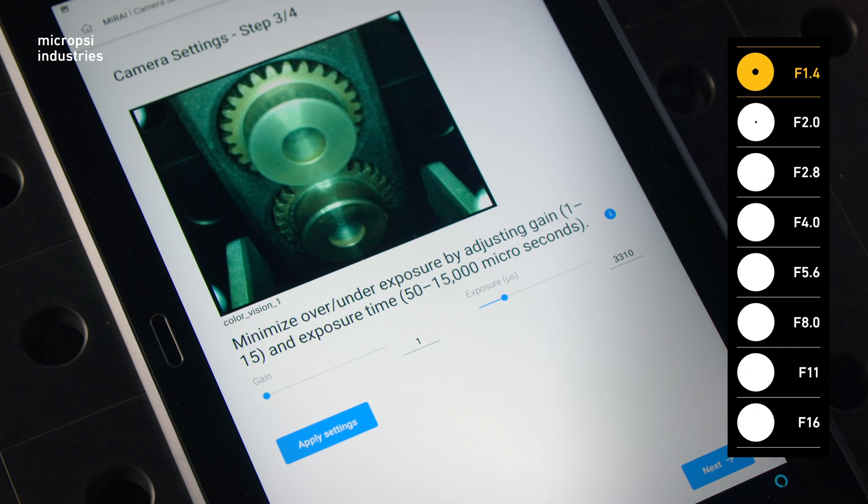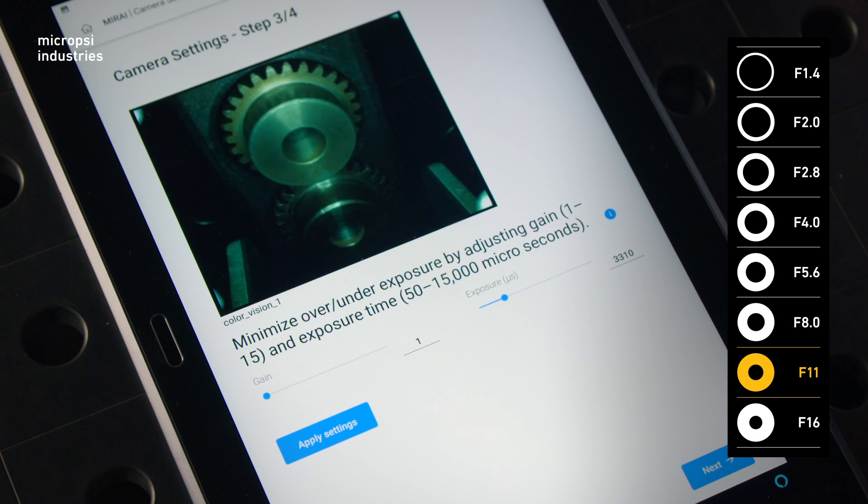Aperture doesn't just influence background sharpness. A higher aperture allows in less light through the lens, resulting in darker images.